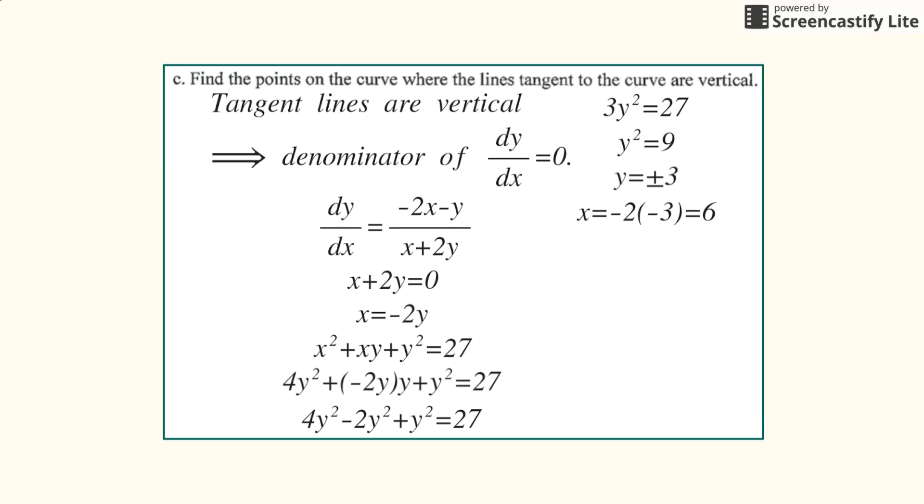For negative 3, the x value is 6. So that point at which the line tangent to the curve is vertical is 6 comma negative 3.